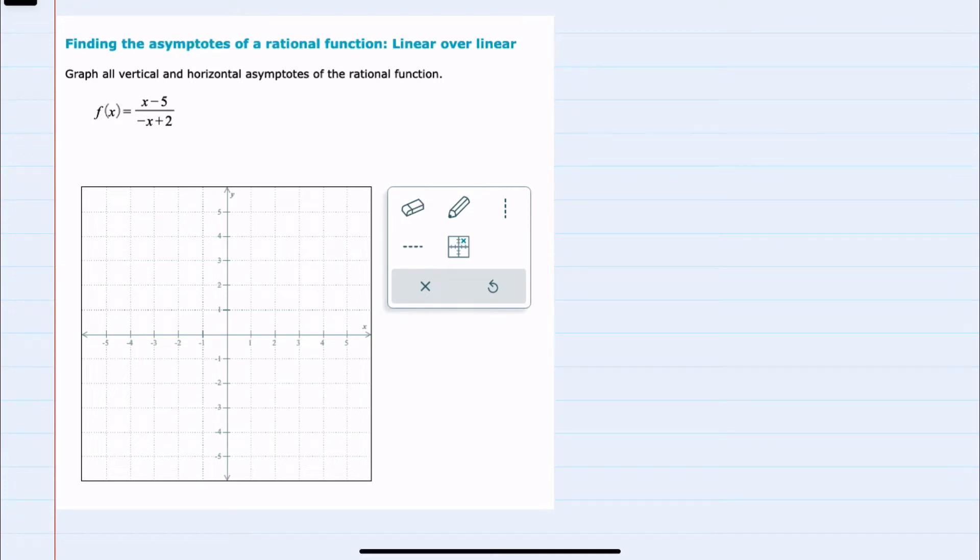In this video, I'll be helping you with the Alex problem type called finding the asymptotes of a rational function, linear over linear.